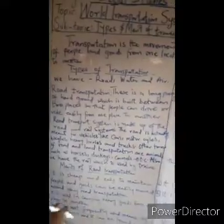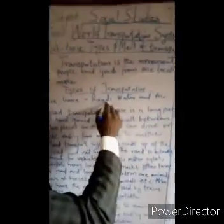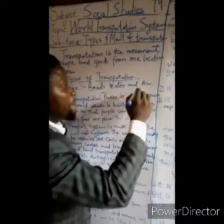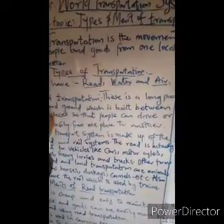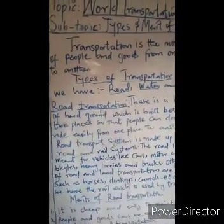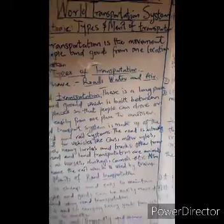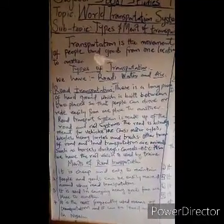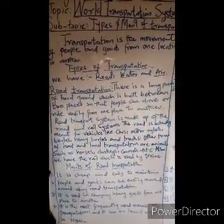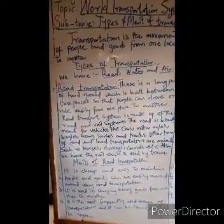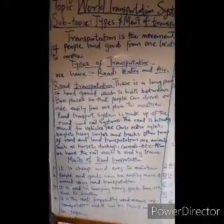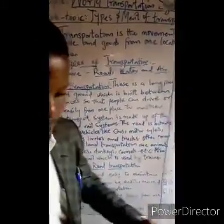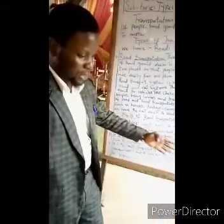We are going to be considering the three types of transportation, which are road, water, and air transportation. First and foremost, road transportation. This is a long piece of hard ground which is built between two places, so that people can drive or ride easily from one place to another.